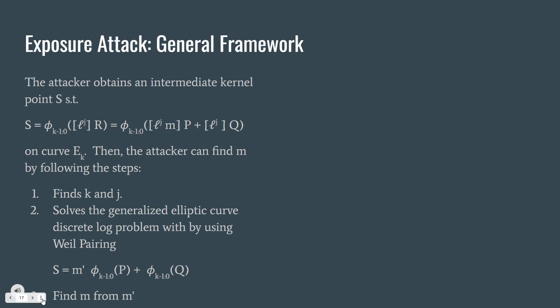The general framework. When the attacker obtains an intermediate kernel point S, he knows that S equals phi of l to the j times R, which equals, because R is m times P plus Q, so it equals phi of l to the j times m times P plus l to the j times Q on the curve Ek. But the attacker only knows S, not Ek, not k, or not j. But he can easily find the secret key m by solving this equation.